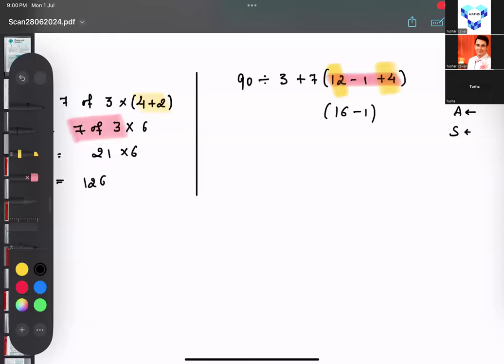So 16 minus 1. Can you see I'm still writing in bracket because it is still not solved fully? And please copy everything. Should I equal now? Where should I focus? Again I should focus on bracket.